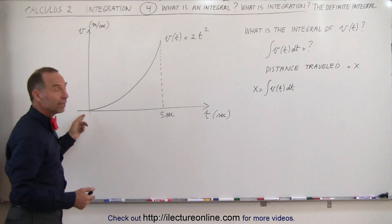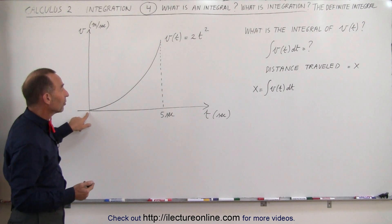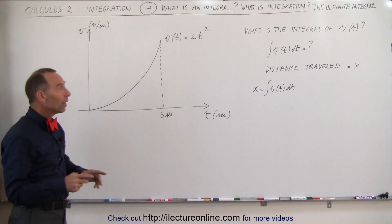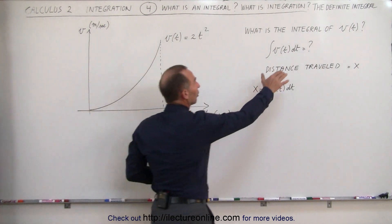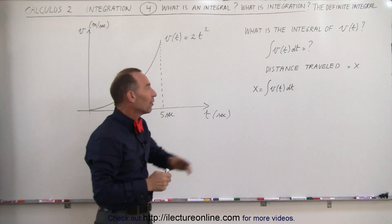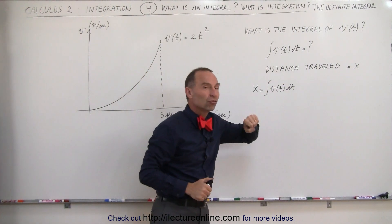And assuming that we start at velocity equal to zero when time is equal to zero, what is the velocity after 5 seconds, and what is the integral of that function? When we integrate v(t), what do we get? And it turns out the integral of a velocity function is the distance traveled.